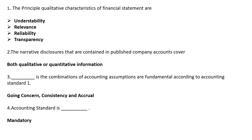The narrative disclosures that are contained in published company accounts cover — the answer is both qualitative and quantitative information. Which is a combination of accounting assumptions that are fundamental according to Accounting Standard 1? The answer is going concern, consistency, and accrual. So, going concern, consistency, and accrual is the combination of fundamental accounting assumptions according to Accounting Standard 1.